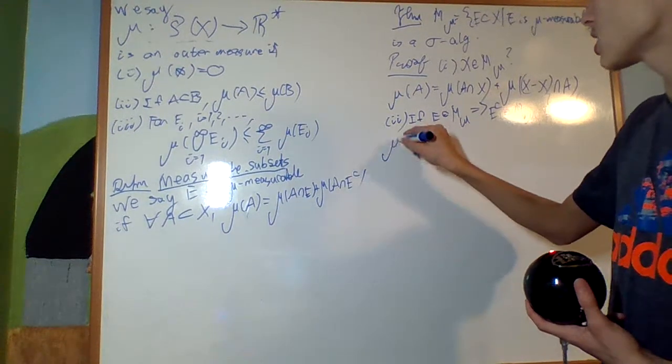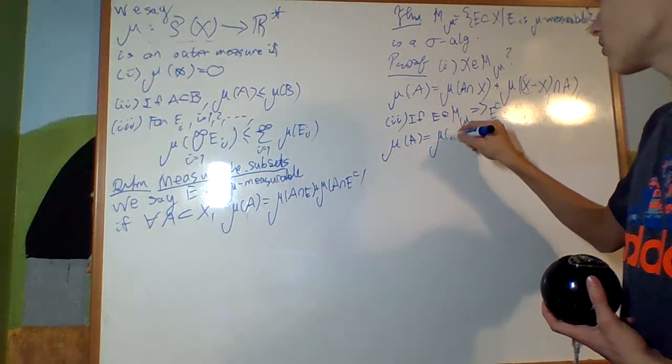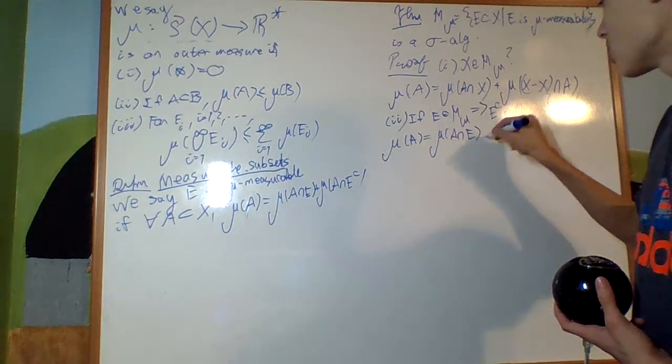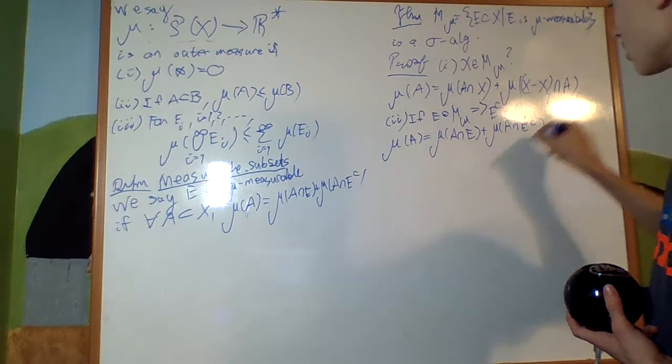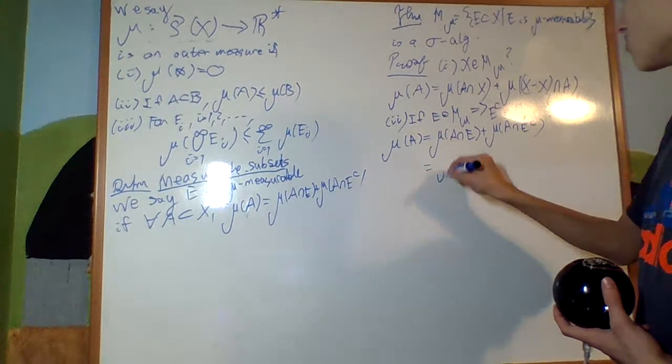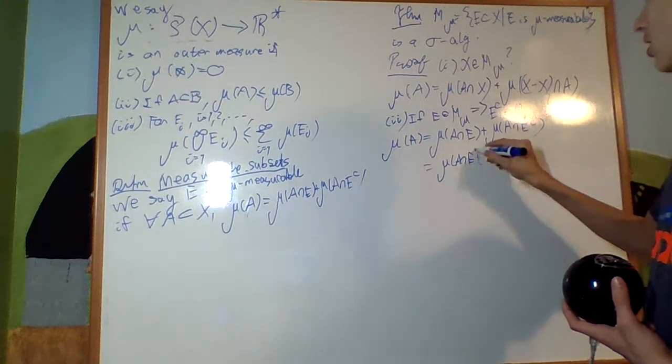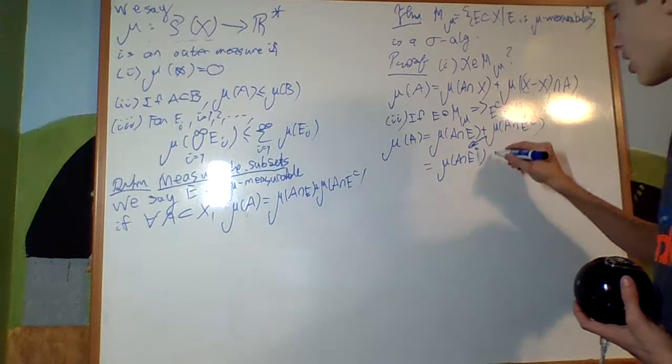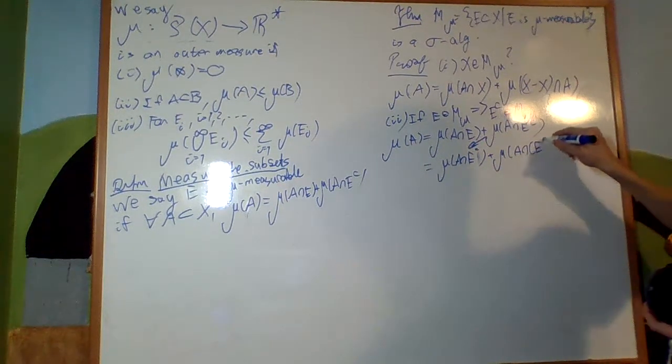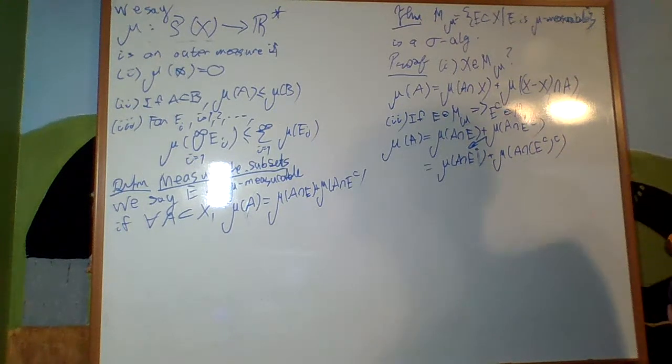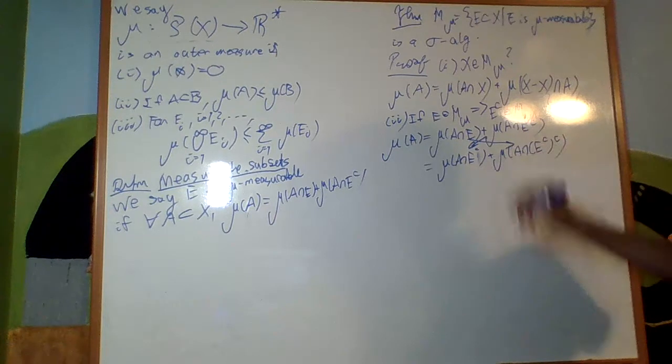Is that the case? Well, yeah, because if mu of A equals mu of A intersect E plus mu of A intersect E complement, that's just gonna be equal to mu of A intersect E complement, taken from right there, plus mu of A intersect E complement complement. Why is that? Because E complement complement is E, which is right there.